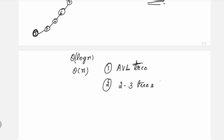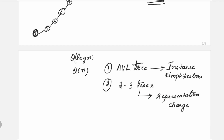The AVL tree is of the first approach — instance simplification. The 2-3 trees approach is of representation change. That is why both AVL tree and 2-3 trees come under the transform and conquer method.